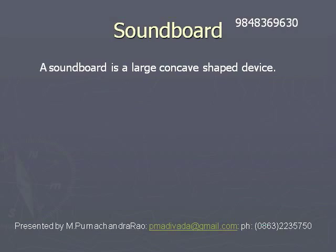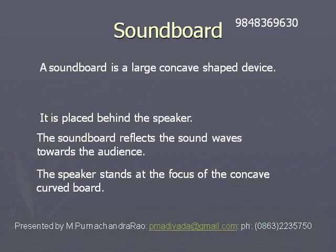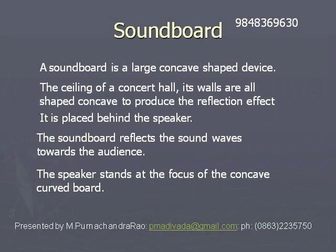In concert halls, to direct the sound in the desired direction, curved surfaces are used. Sometimes a concave roof is given to concert halls, and curved sound boards are placed behind the stage to direct the sound in the desired direction. By using several such devices based on multiple reflections of sound, sound can be sent in a desired direction.